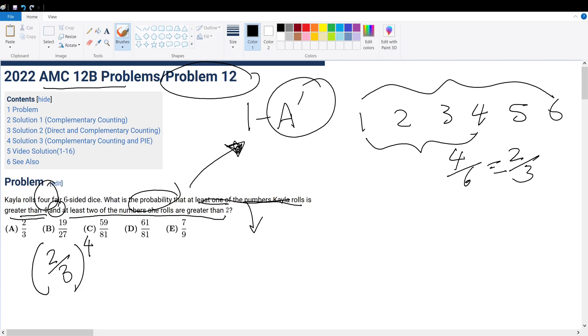Now, what is the second condition? At least two of the numbers she rolls are greater than 2, and at least one of the numbers Kayla rolls is greater than 4.